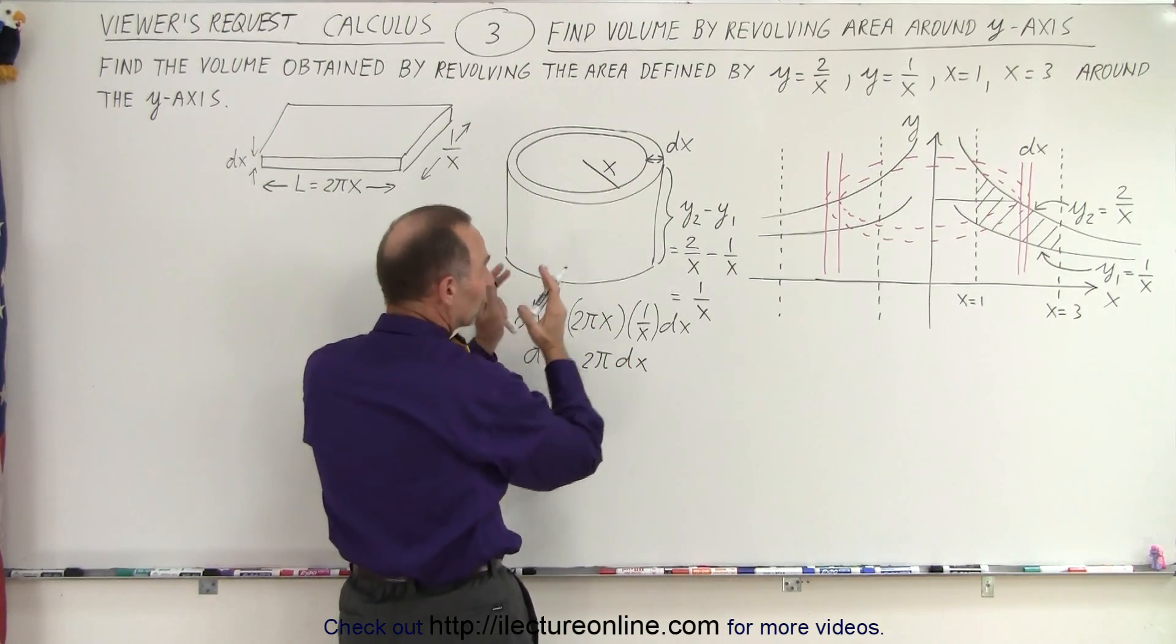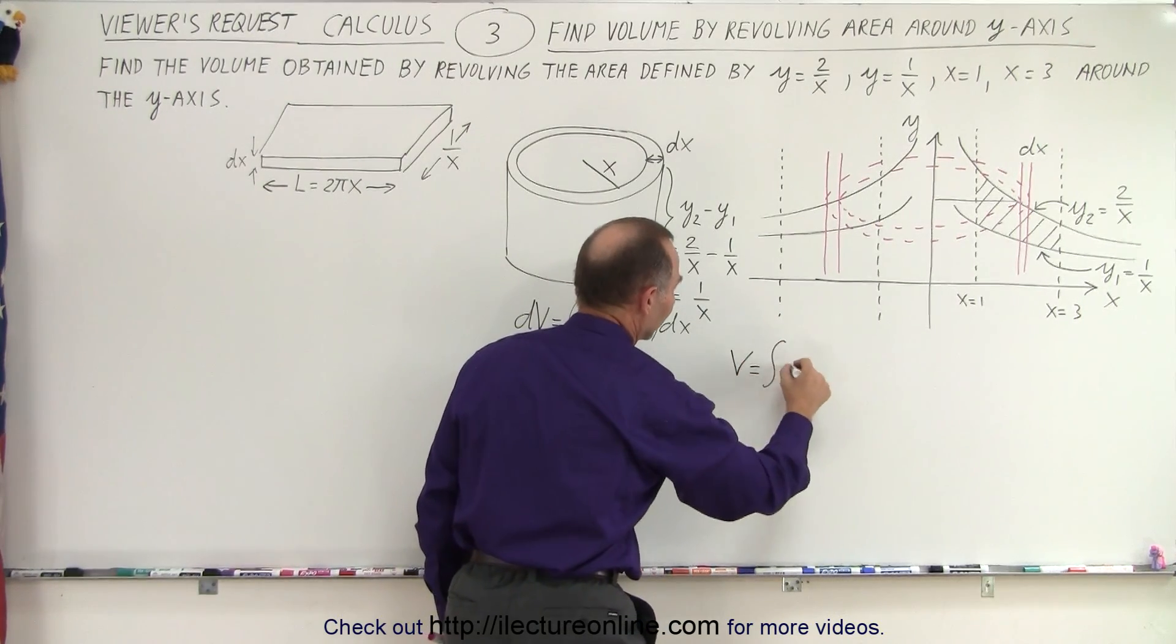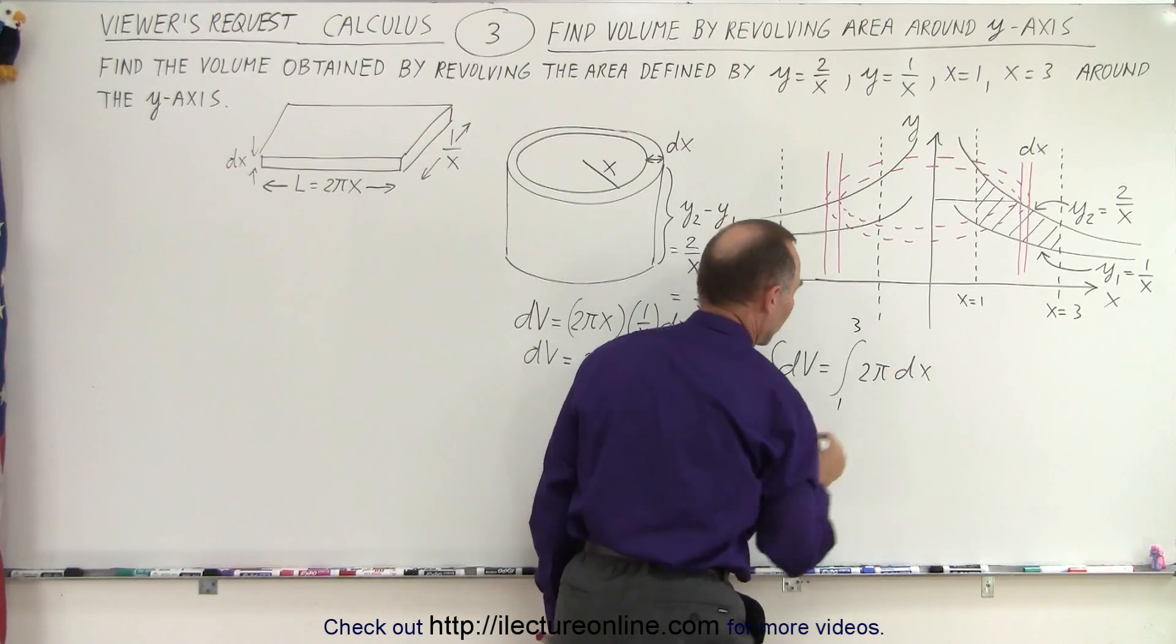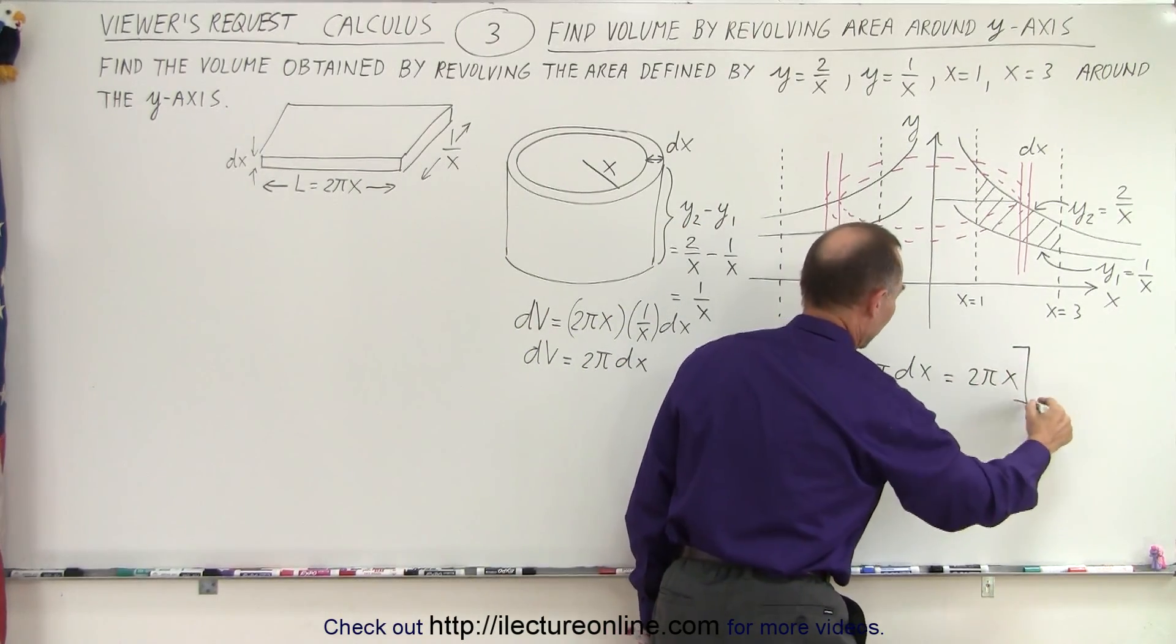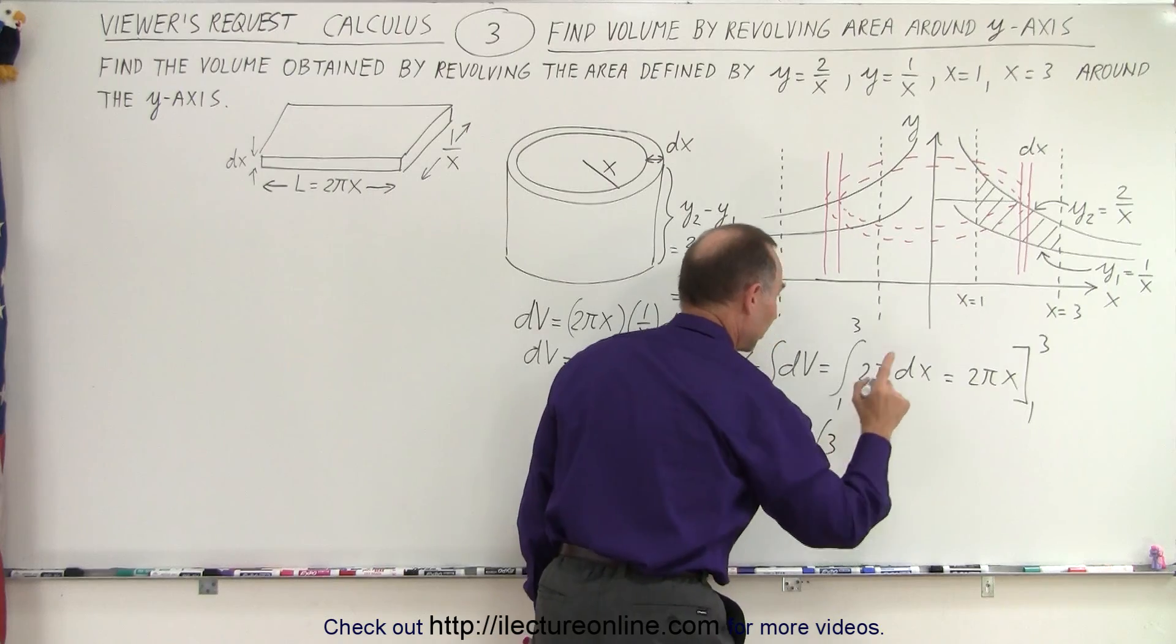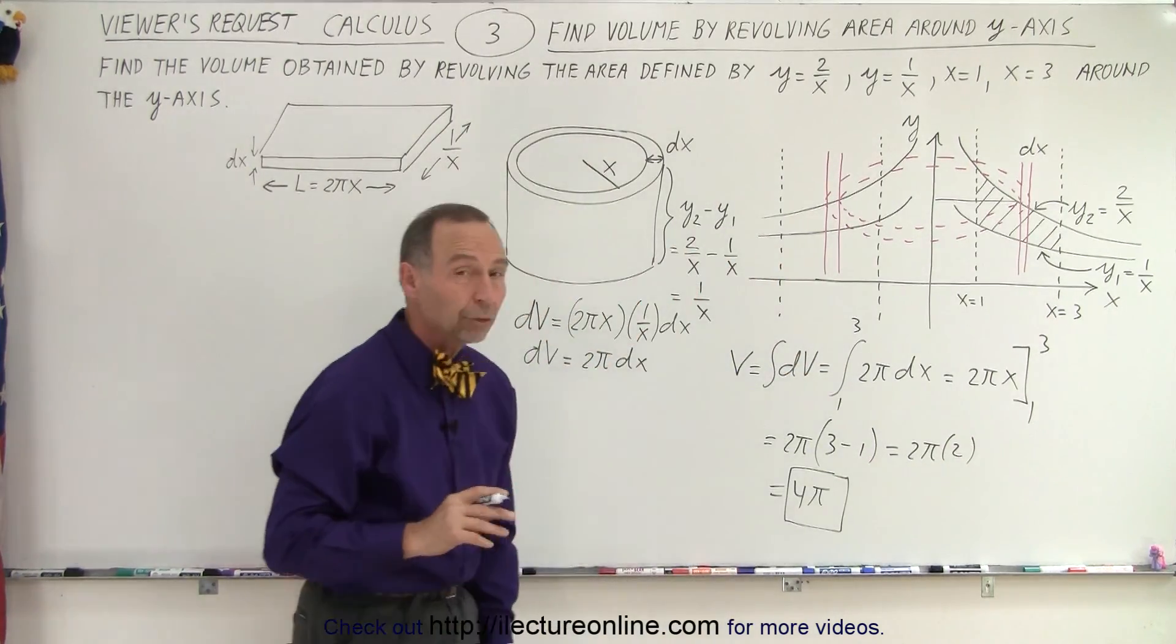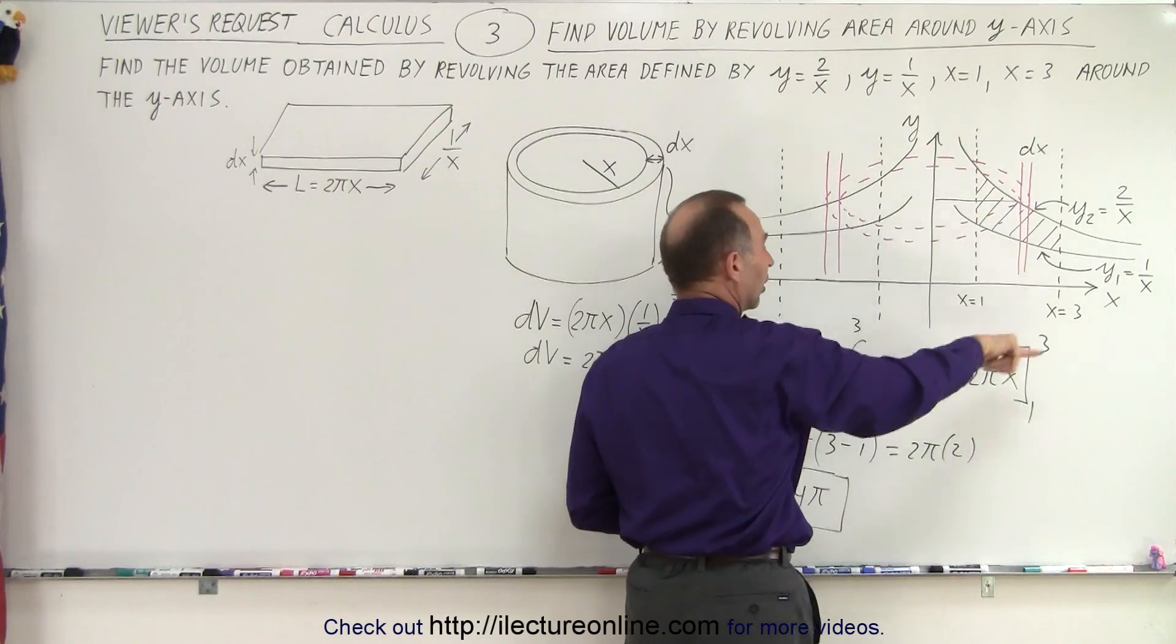And now we're going to integrate from the inner to the outer cylinder. So that's what this looks like. We could say that V is equal to the integral of dV, which is equal to the integral of 2π dx. And we're going to integrate from x equals 1 to x equals 3. And that's a really easy integral. So that would be equal to 2π x. Evaluate it from 1 to 3. So this would be equal to 2π times, plugging the upper limit, we get 3. Plugging the lower limit, we get 1. So this is equal to 2π times 2, or that's equal to 4π. So the volume of that would be equal to 4π, which is twice the volume that we found on the previous video when we evolved the area around the x-axis.